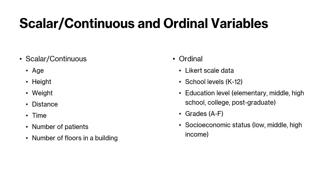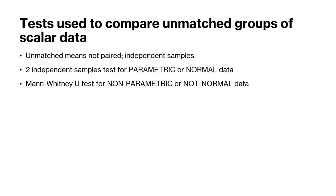To transition to today's content, we're going to talk about comparisons for scalar continuous and ordinal variables. Quick examples of scalar continuous variables include age, height, and weight. Ordinal variables could commonly be Likert scale data — one of the most common things used in medical research, especially in survey studies — as well as school levels from K to 12, education level, and grades. We're going to focus on unmatched or unpaired groups.